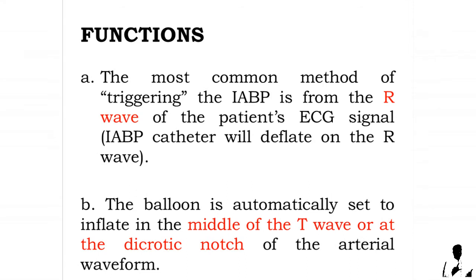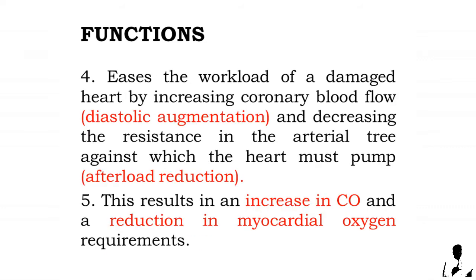The most common method of triggering the intra-aortic balloon pump is from the R wave of the patient's ECG signal; the IABP catheter will deflate on the R wave. The balloon is automatically set to inflate in the middle of the T wave or at the dicrotic notch of the arterial waveform.